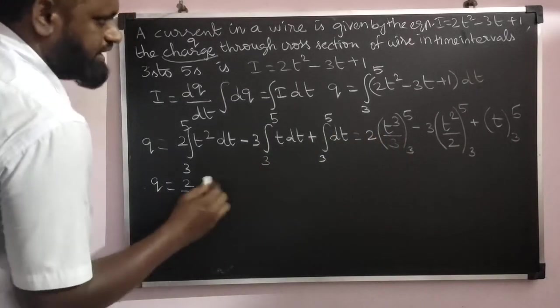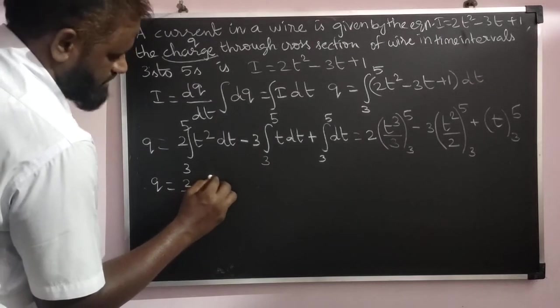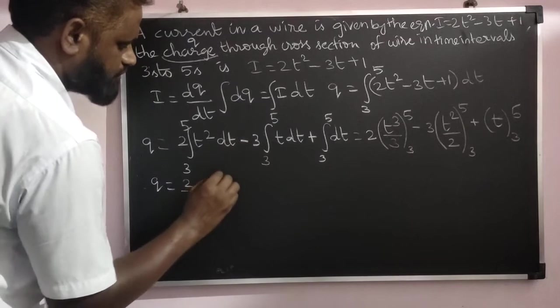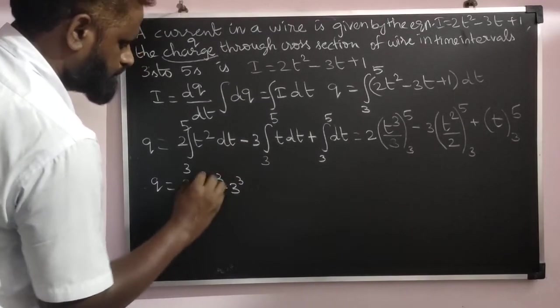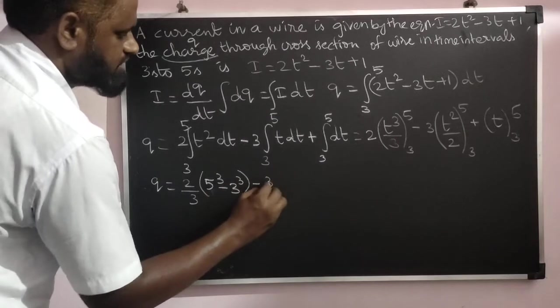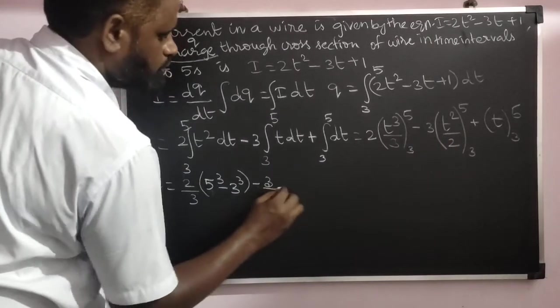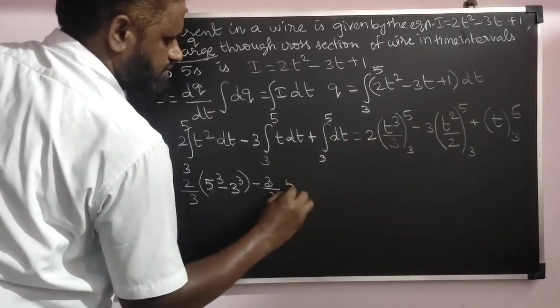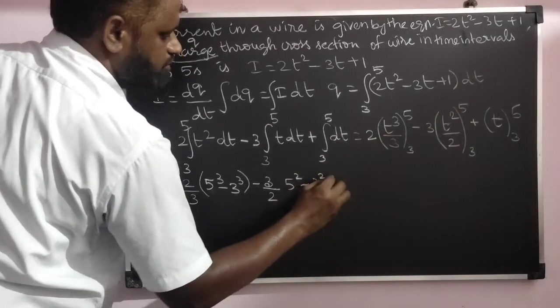times (5³ - 3³) for the first term, minus 3/2 times (5² - 3²), plus (5 - 3).